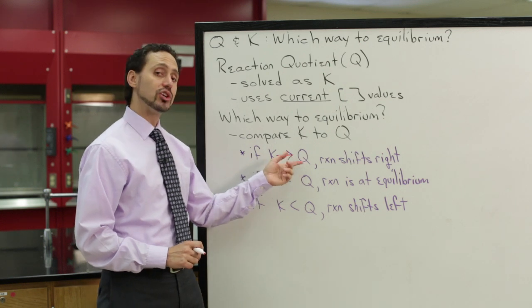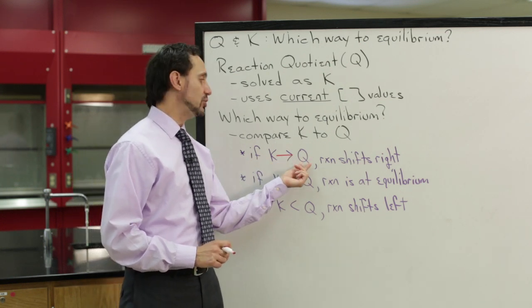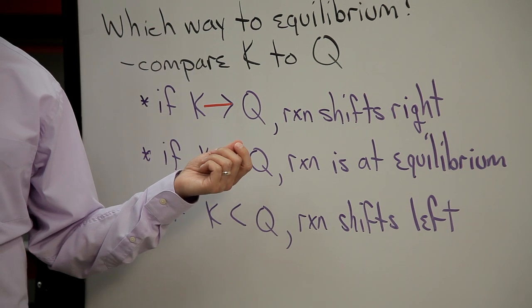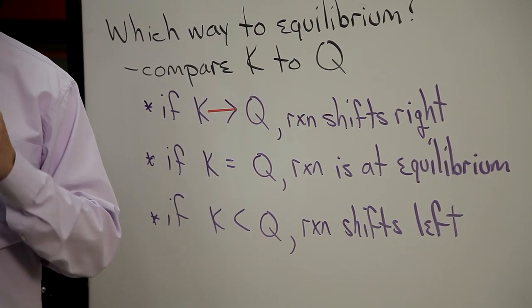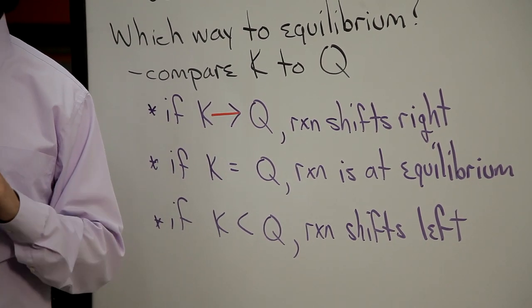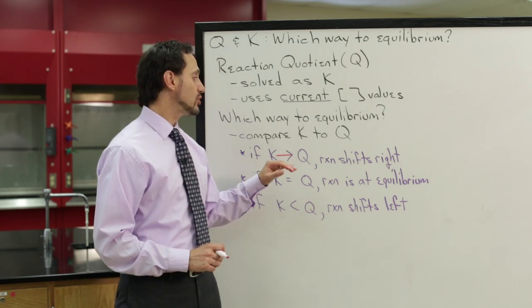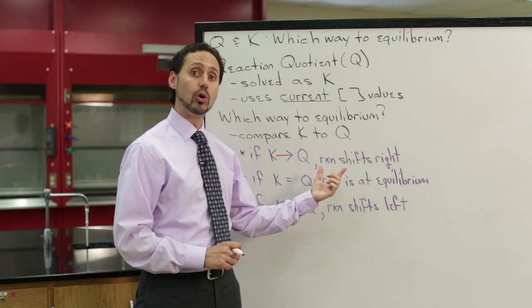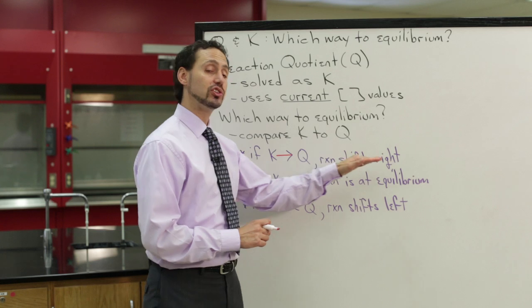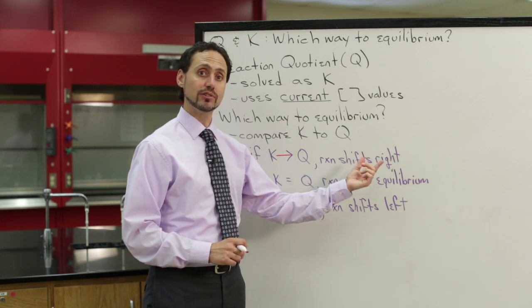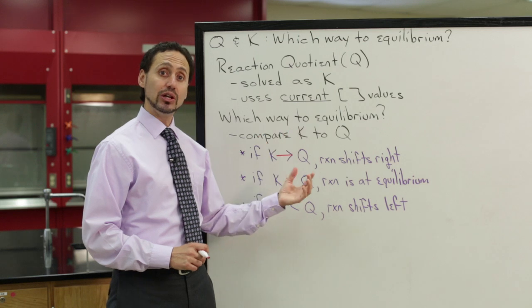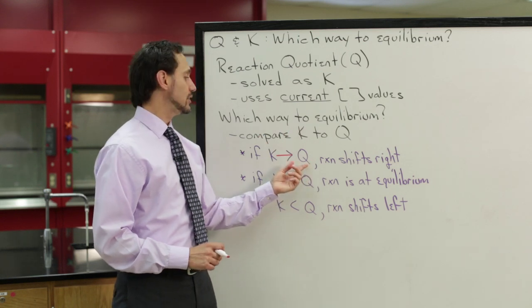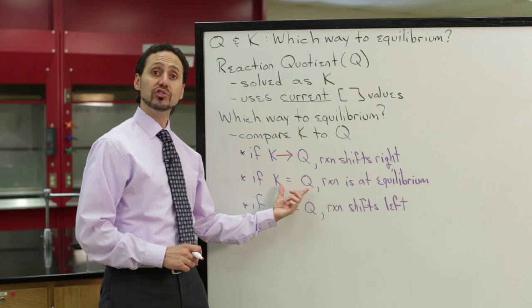If K is larger than Q, that means that Q is too small. Q does not have enough products present yet. So what's going to happen is the reaction will shift to form more products. It will shift to the right to get more products. And that will increase the value of Q until Q is equal to K.